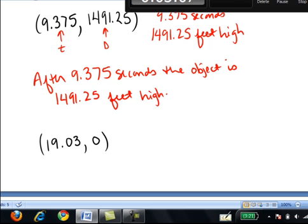Lastly, we're given the point (19.03, 0). Now notice, the output value is 0. So on the graph, the height of the graph is 0. That would put this point right on the x-axis. This is the x-intercept of the graph.